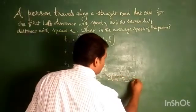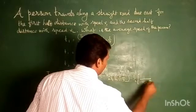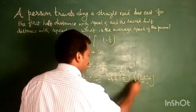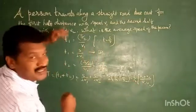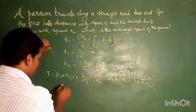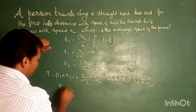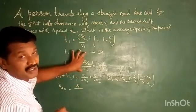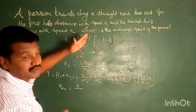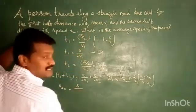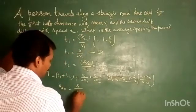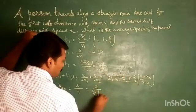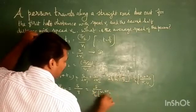So s by 2 becomes v1 plus v2 by v1 v2. So total time is t equals s by 2 times v1 plus v2 by v1 v2.